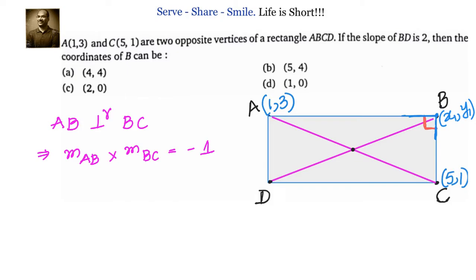The first condition we are going to apply is that AB is perpendicular to BC. We know that if two lines are perpendicular to each other, then the product of their slopes equals minus 1. The formula for slope of a line segment is Y2 minus Y1 divided by X2 minus X1.